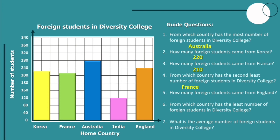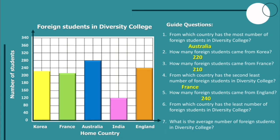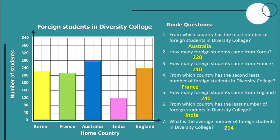Number five: how many foreign students came from England? We have 240. Number six: from which country has the least number of foreign students in Diversity College? We can see the pink bar, which indicates India. Number seven: what is the average number of foreign students in Diversity College? To get the average, we add all the frequencies and divide by the number of categories. So we have 220 plus 210 plus 280 plus 120 plus 240, divided by 5, which equals 214. The average number of foreign students in Diversity College is 214.